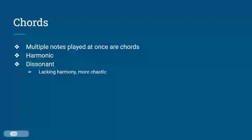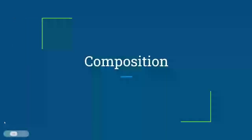Multiple notes playing at the same time are called chords. They can range from being as simple as two notes to being extremely complicated combinations. Chords can either be harmonic or dissonant, which means without harmony. This explanation is extremely condensed and omits a lot of important things, but these are the basics that are pretty helpful to know for music composition.